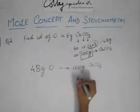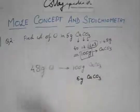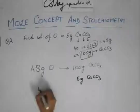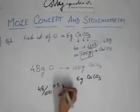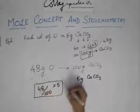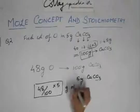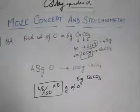In 5 grams of CaCO3, how many grams of oxygen would you have? You would just use the unitary method: 48 by 100 times 5. So this many grams of oxygen. This is the weight of oxygen in 5 grams of calcium carbonate.